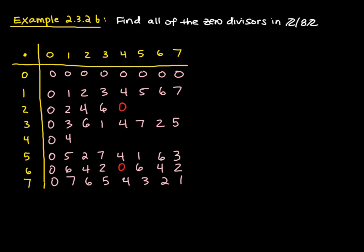Continuing, two times five is ten, which is congruent to two mod eight. Two times six is twelve, congruent to four mod eight. Two times seven is fourteen, congruent to six mod eight. Now let's jump down to the fifth row.